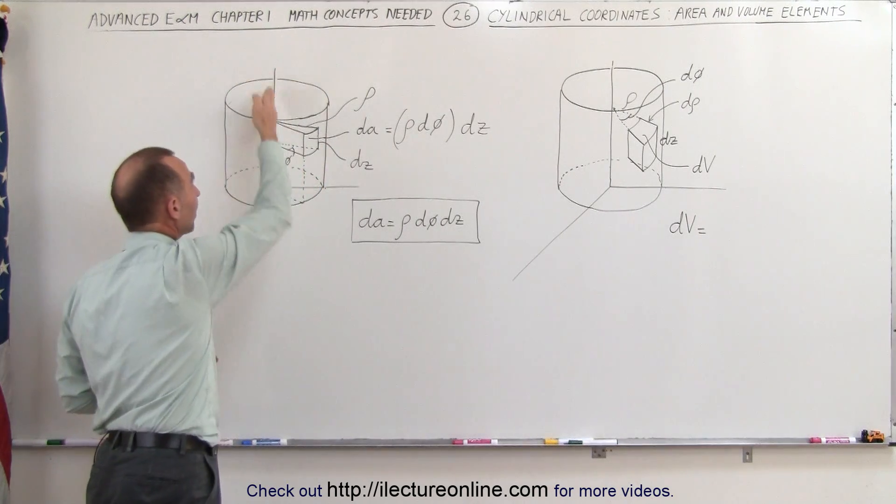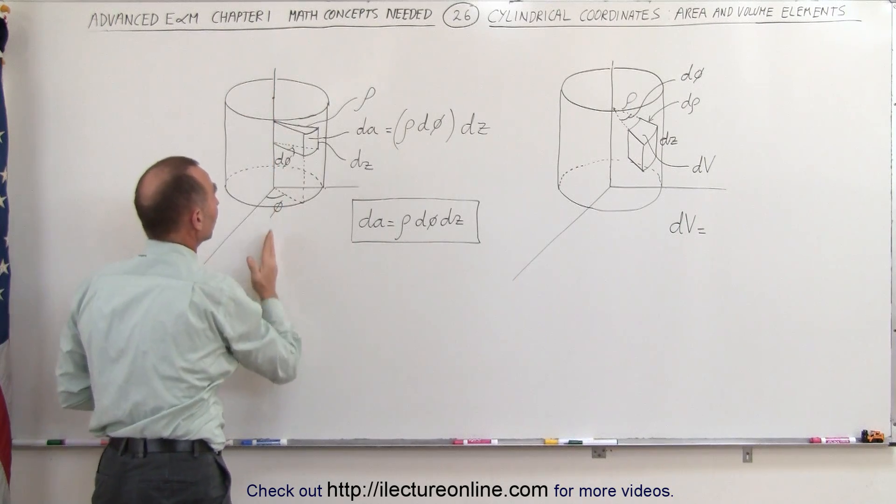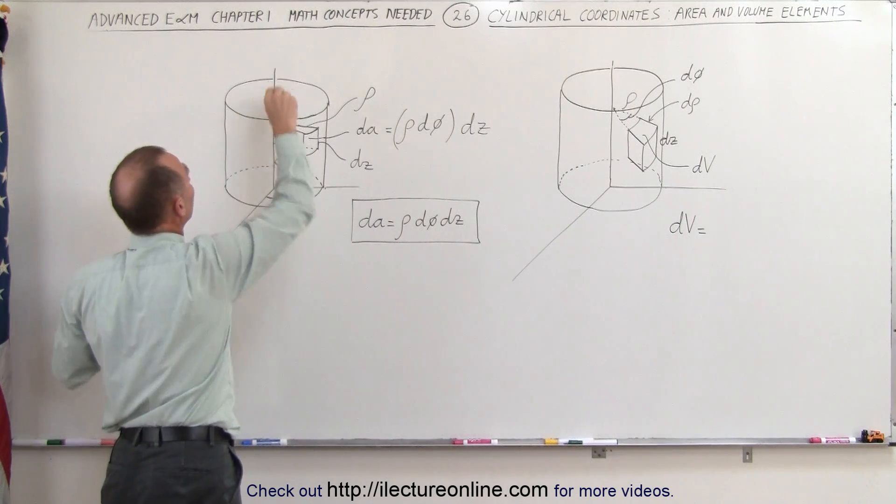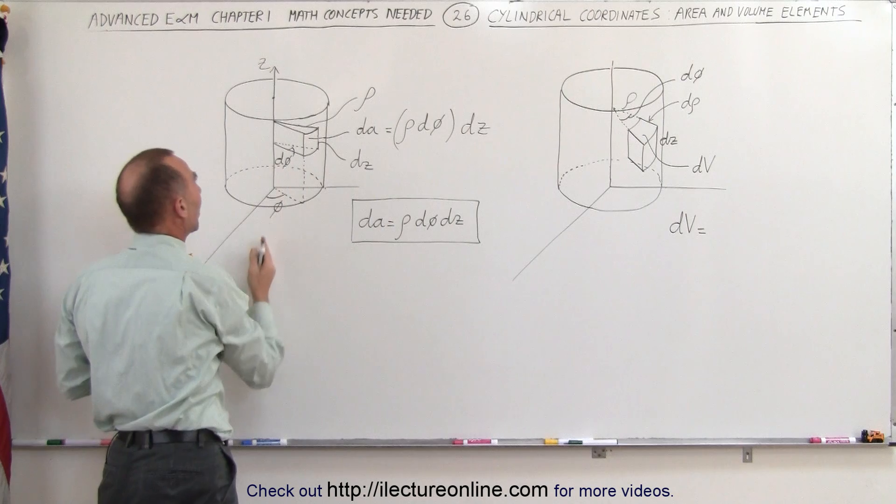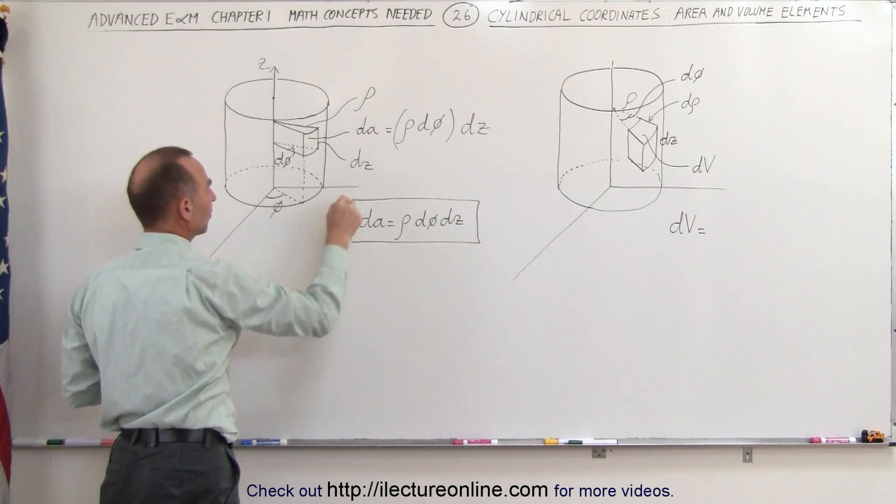The distance from the center line here, the line that is the center or the z-axis, I should call it, the z-axis runs right down the middle of your cylinder. This would be your x-axis,